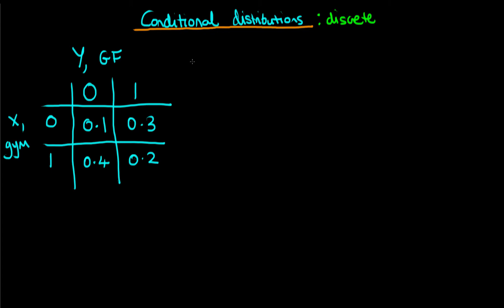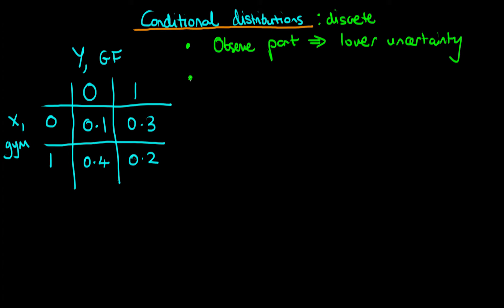So what is a conditional distribution? Often we're dealing with the outcome of two or more processes, and before we actually observe that outcome we're uncertain as to what it will be. In conditional distributions we're considering the case where we actually know with certainty, or we observe, one or more parts of that system. Because we observe part of the system, that means we have lower uncertainty than we would if we were just dealing with the joint distribution. Also, knowing the outcome of part of the system reduces the dimensionality of our problem. So if we start off with a two-dimensional probability distribution and we observe one part of it, we end up with a one-dimensional distribution.